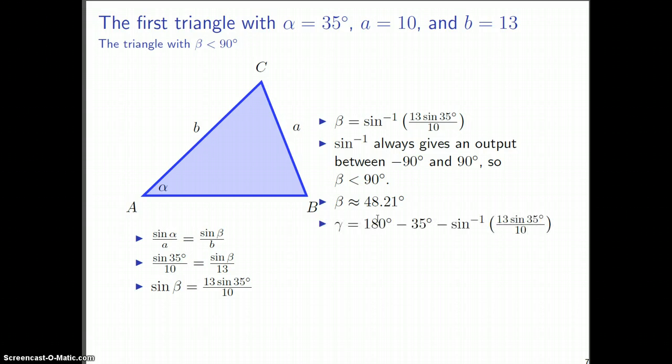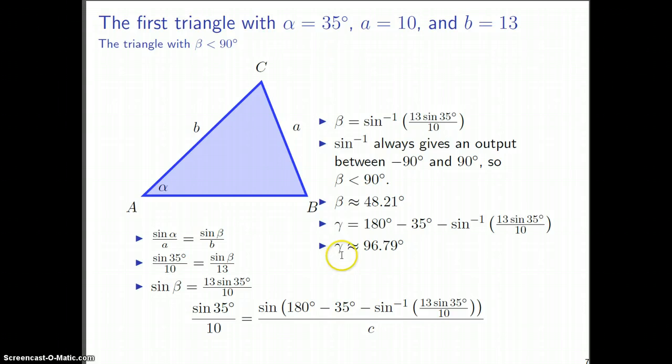Then we can get gamma. Since we now know the angle beta, all we have to do to get gamma is subtract away the other two angles we have from 180 degrees. As far as an exact answer, here's one right here. If you punch this into a calculator, you'll get that gamma is equal to 97 degrees almost.